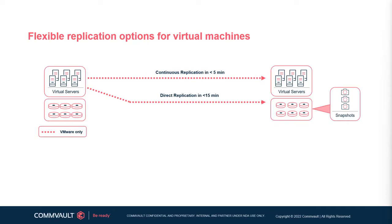Commvault Disaster Recovery utilizes several different technologies under the hood. For customers running VMware, the solution provides two configurations: one for recovery point objectives of under 5 minutes and the other for recovery point objectives under 15 minutes. Both configurations require more advanced back-end design and hardware requirements due to the extremely aggressive RPOs.